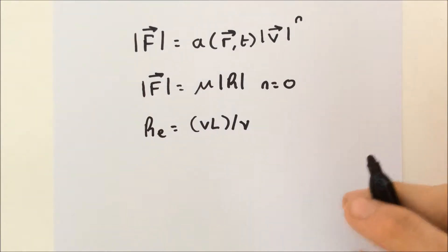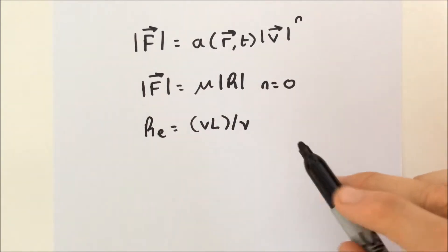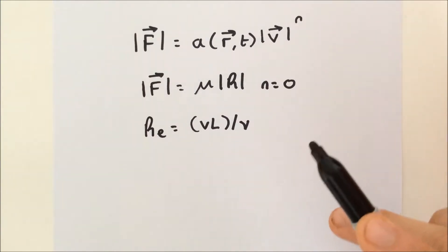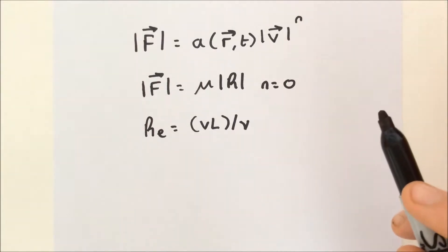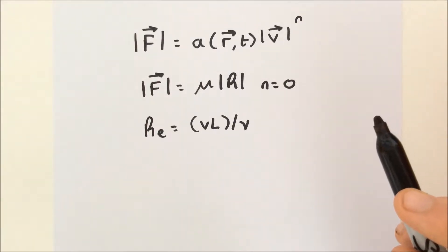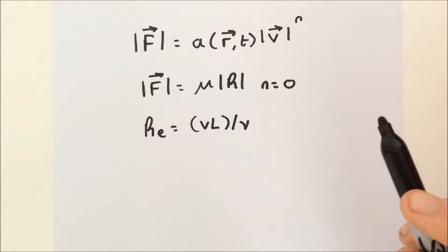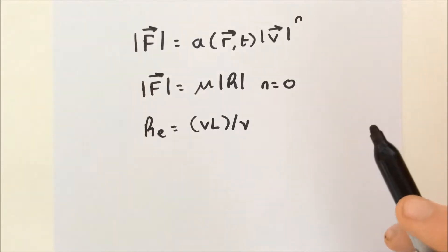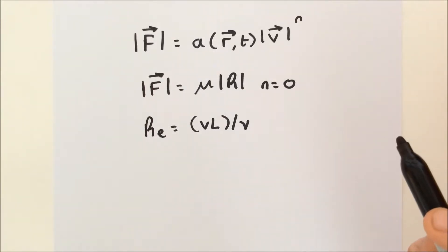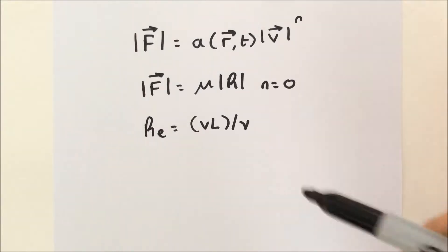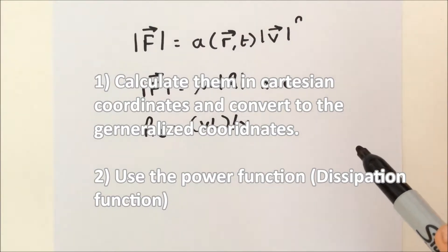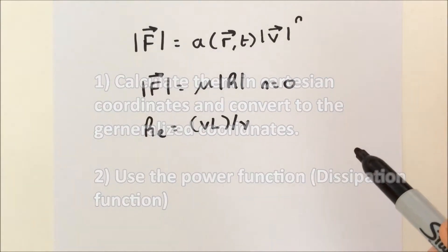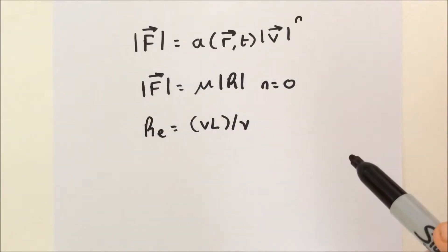Now, the Lagrangian method calls us to find the generalized forces corresponding to the different coordinates we have used to characterize the degrees of freedom of motion. There are two general ways to determine the generalized forces: one is to calculate them in Cartesian coordinates and convert them to generalized coordinates, and the second is to use the power function. We're going to do both in this video today.